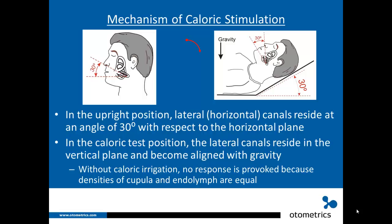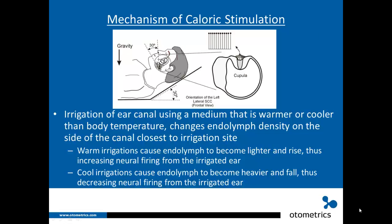Without caloric irrigation, no response is provoked because the densities of the cupula and endolymph are equal and the semicircular canals are not sensitive to gravity. Irrigation of the ear canal using a medium warmer or cooler than body temperature changes endolymph density on the side of the canal closest to the irrigation site. Warm irrigations cause endolymph to become lighter and rise, resulting in an increase in neural firing from the irrigated ear. Cool irrigations cause endolymph to become heavier and fall, resulting in a decrease in neural firing from the irrigated ear.